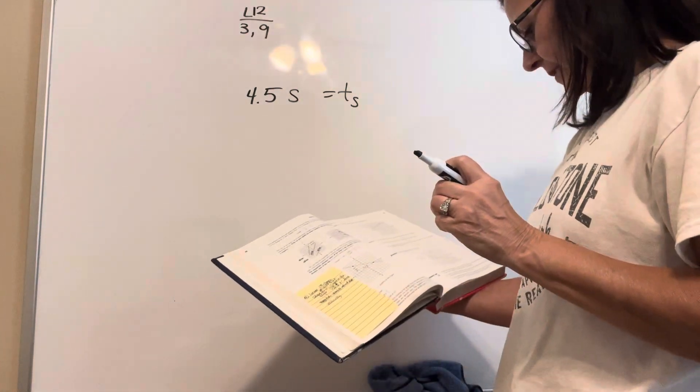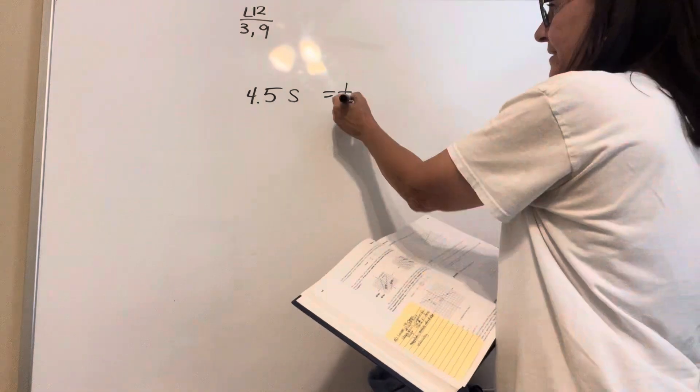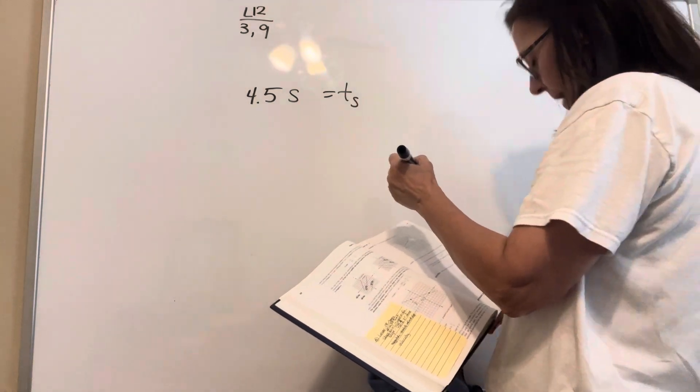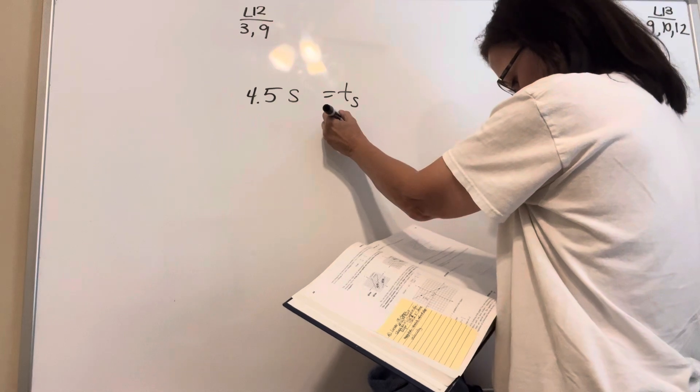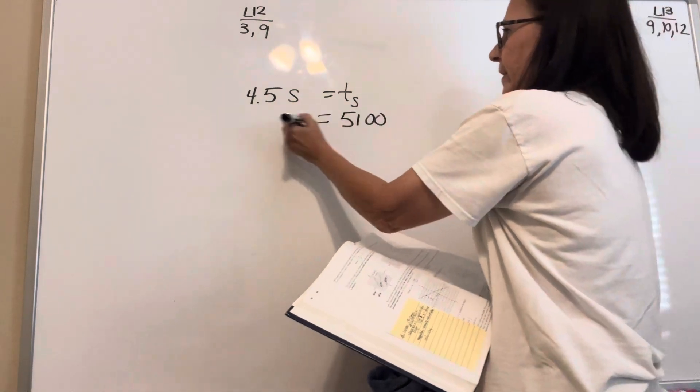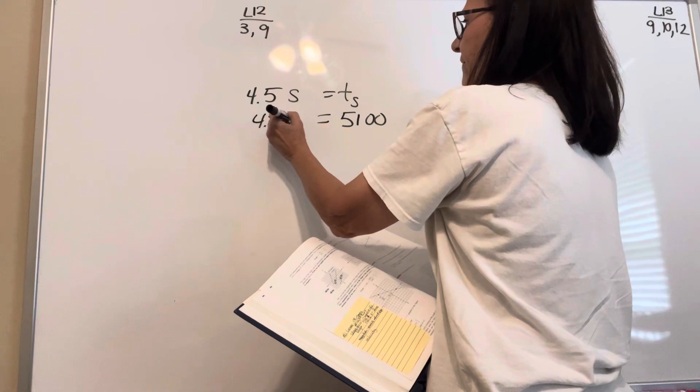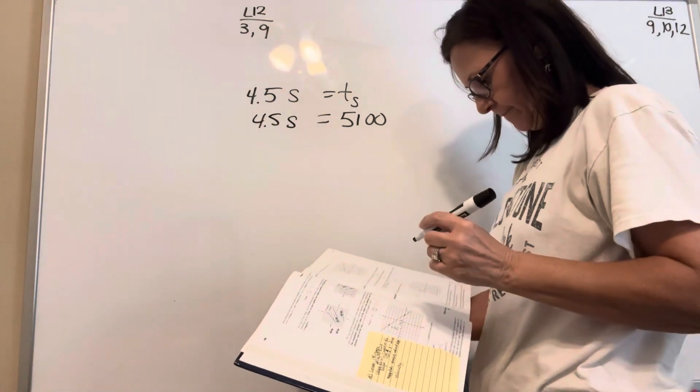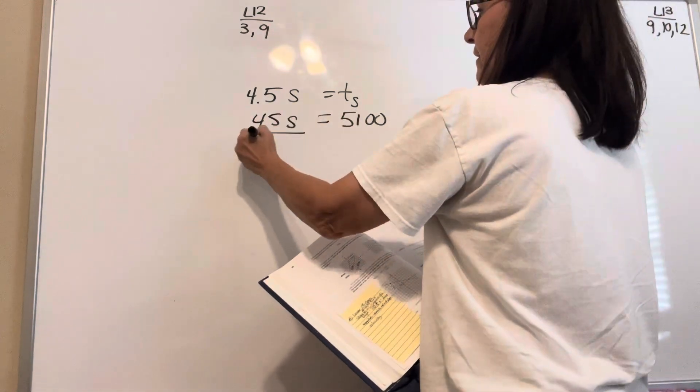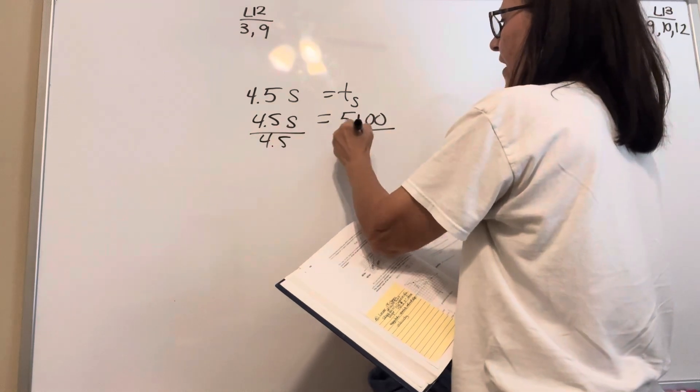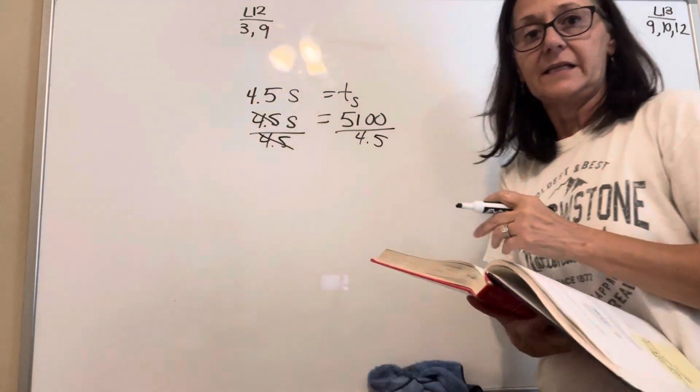If 5,100 tickets were sold, that's tickets sold, how many—5,100 equals 4.5 times seats. How many could be seated? Okay, you just divide by 4.5. That's how many seats.